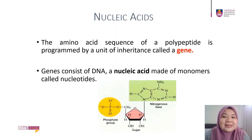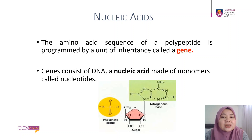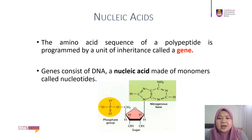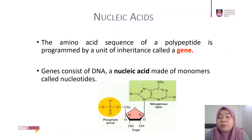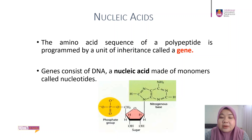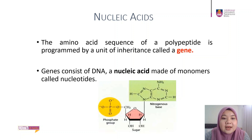The amino acid sequence of a polypeptide is programmed by a unit of inheritance called a gene. Genes consist of DNA, a nucleic acid made of monomers called nucleotides. Because nucleic acids consist of monomers, we consider them as polymers. The monomer for nucleic acid — both DNA and RNA — are called nucleotides.